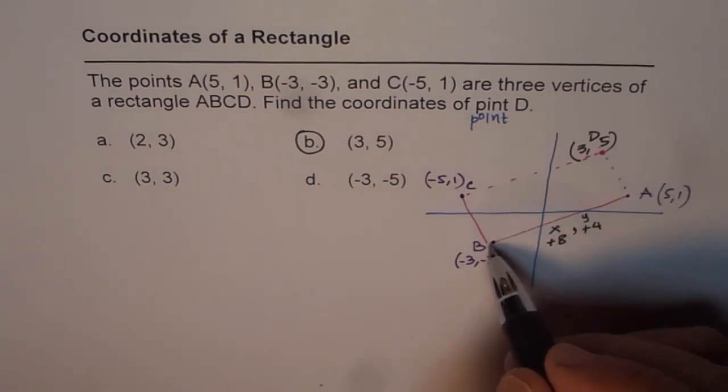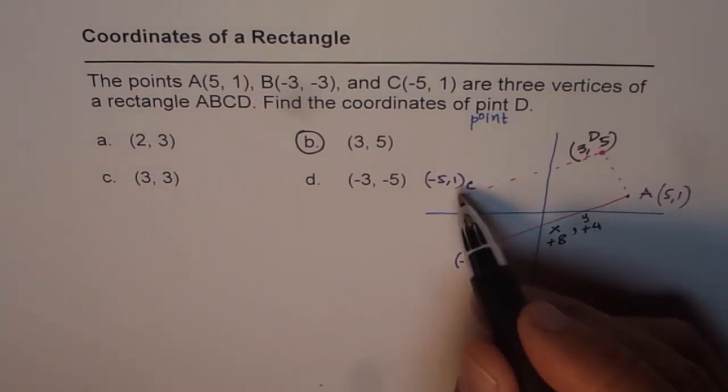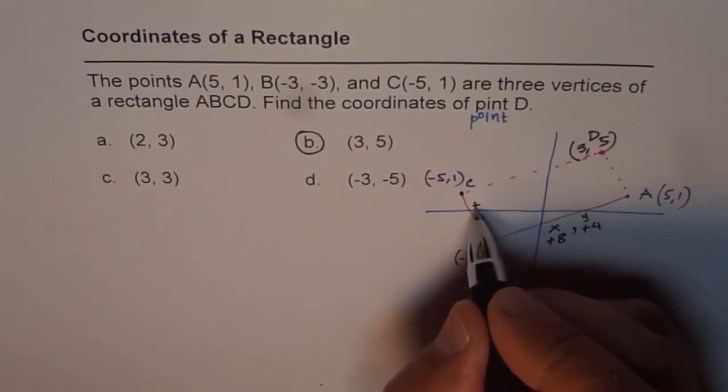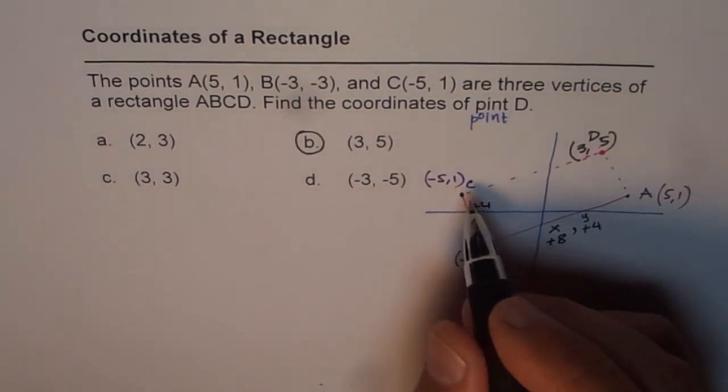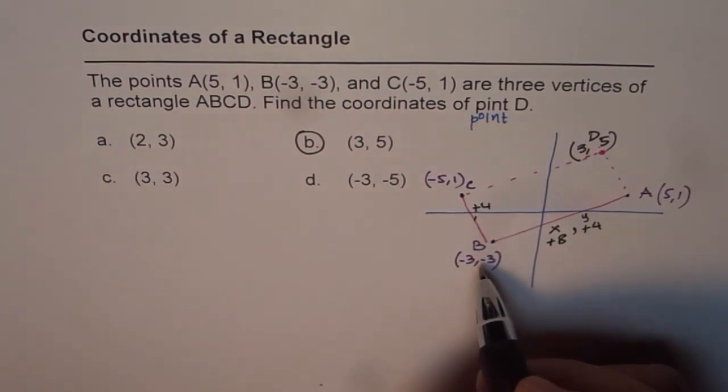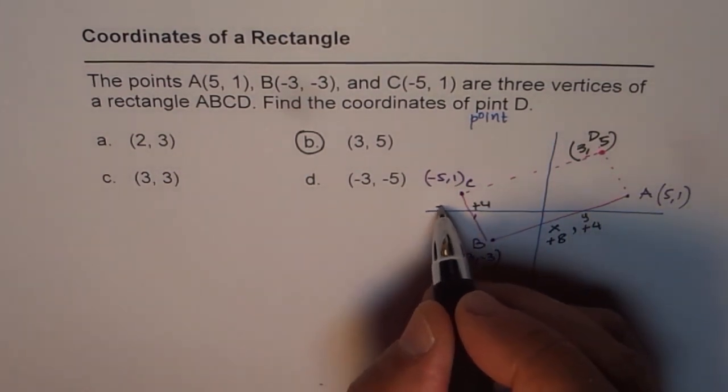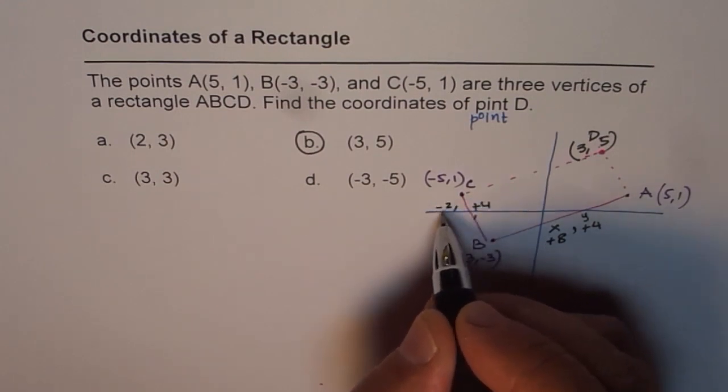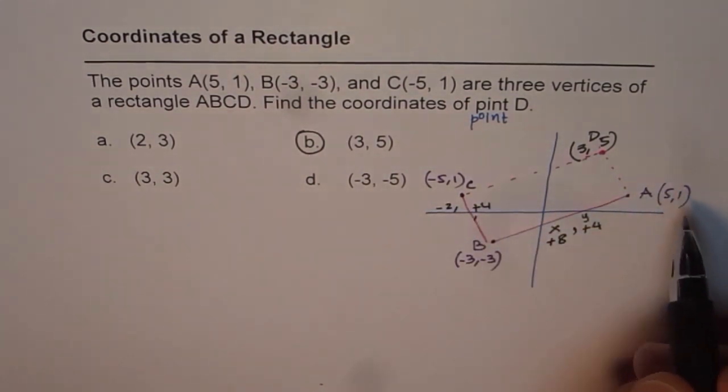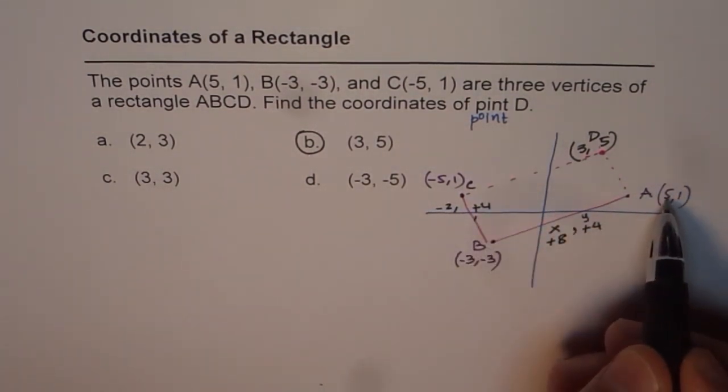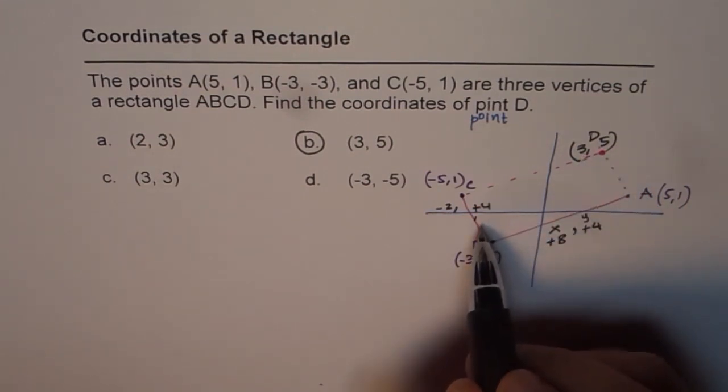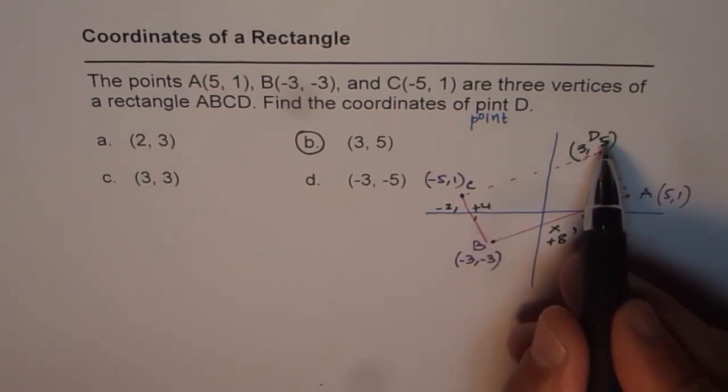So how much is the rise? That is, change in y values. -3 to 1 is plus 4, correct? This is the change in y values. And for the x values, -3 to -5, that means -2, right? So this is what change you have to do. So if I take away 2 from 5, I get 3. And if I add 4 to 1, I get 5.